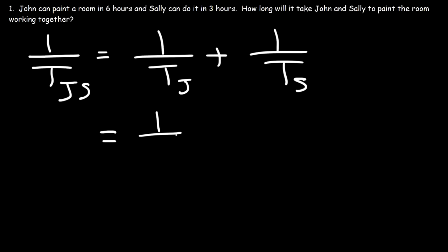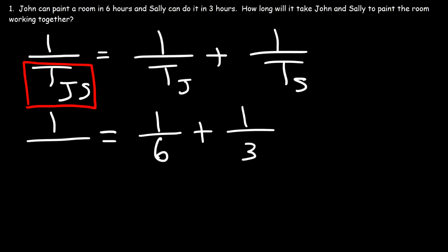We're going to replace T_J with 6 because John can do it in six hours, and T_S with 3. We can replace the combined time variable with X since that's what we're looking for. So how can we calculate the value of X? At this point it's basically algebra.